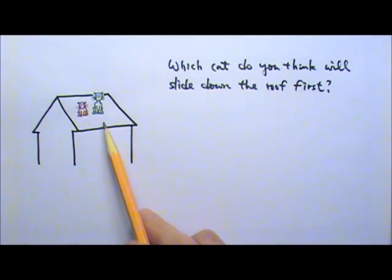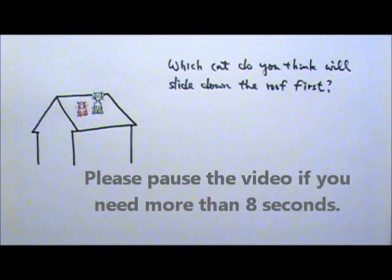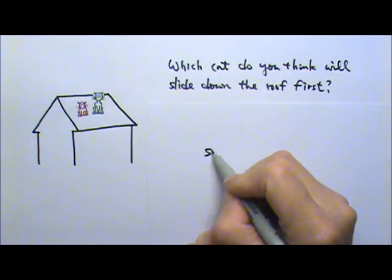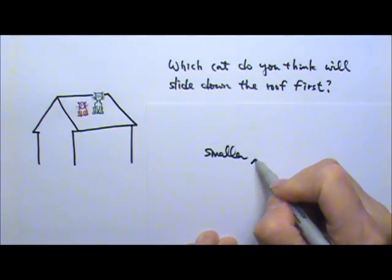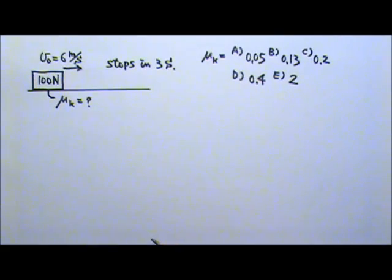Two cats are sitting on a roof. Which cat do you think will slide down the roof first? It's the one with the smaller μ, meow. Okay, here comes the first real question.